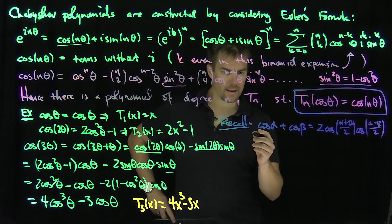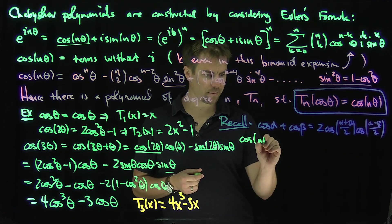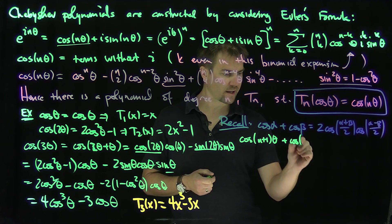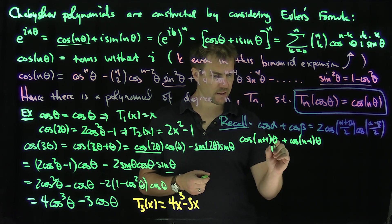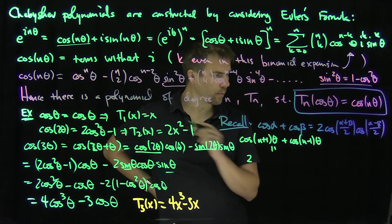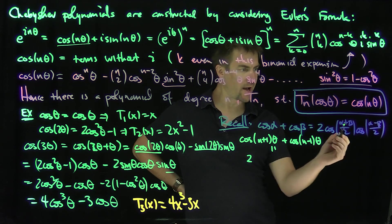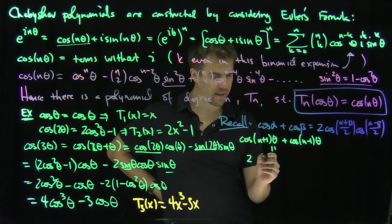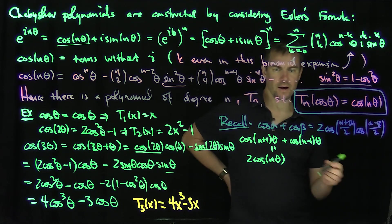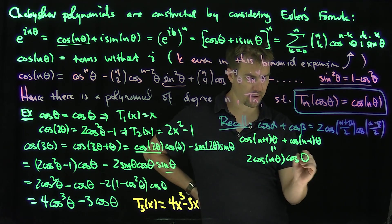In particular, setting alpha = (n+1)·theta and beta = (n-1)·theta, we get cosine((n+1)·theta) + cosine((n-1)·theta) = 2·cosine(n·theta)·cosine(theta).